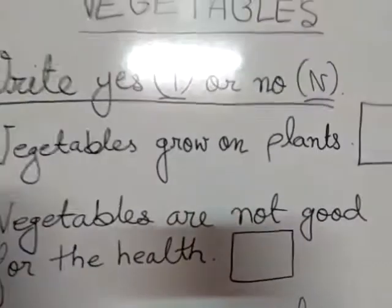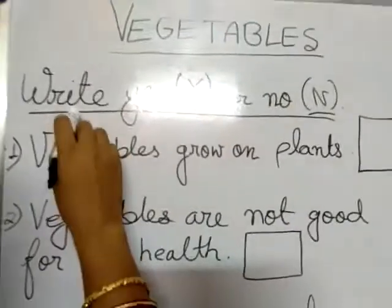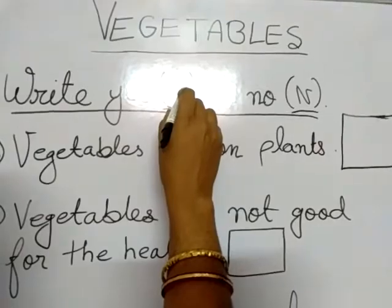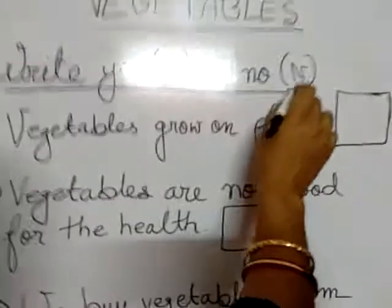First, read the statement carefully. Then write yes — Y, or no — N.